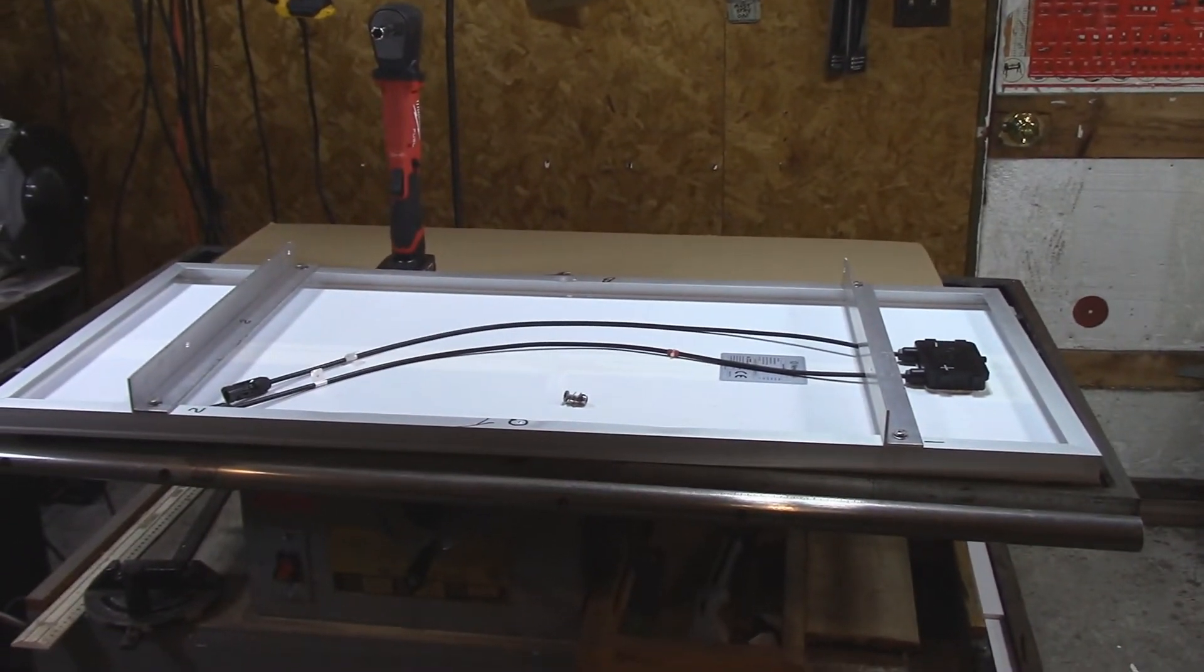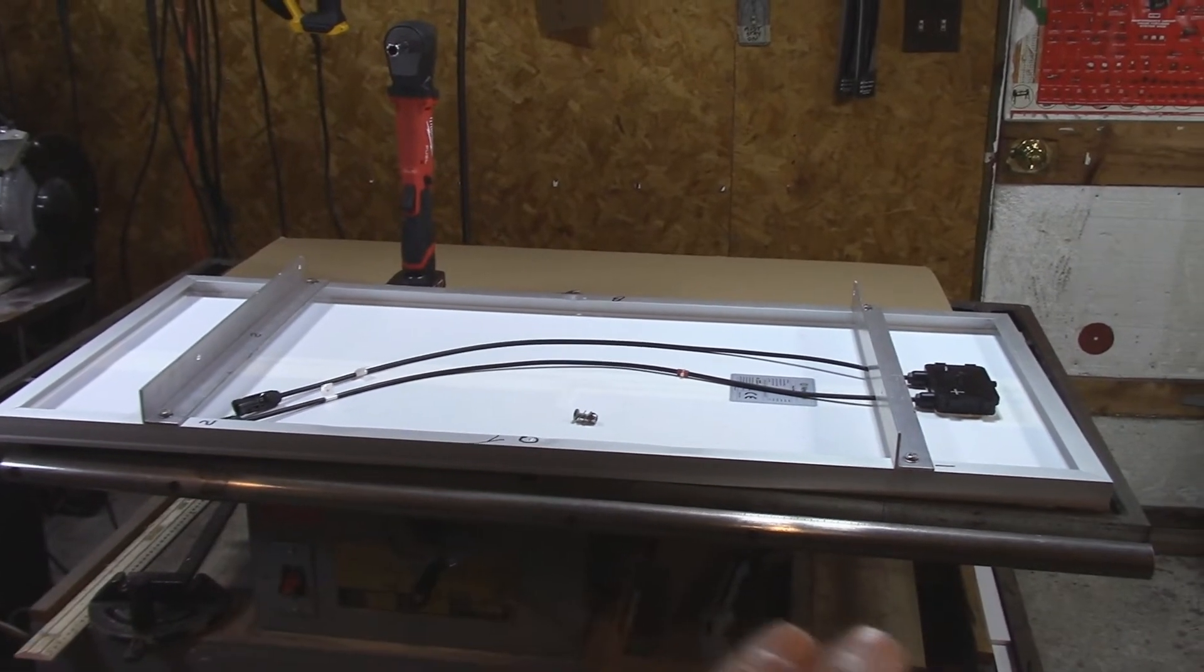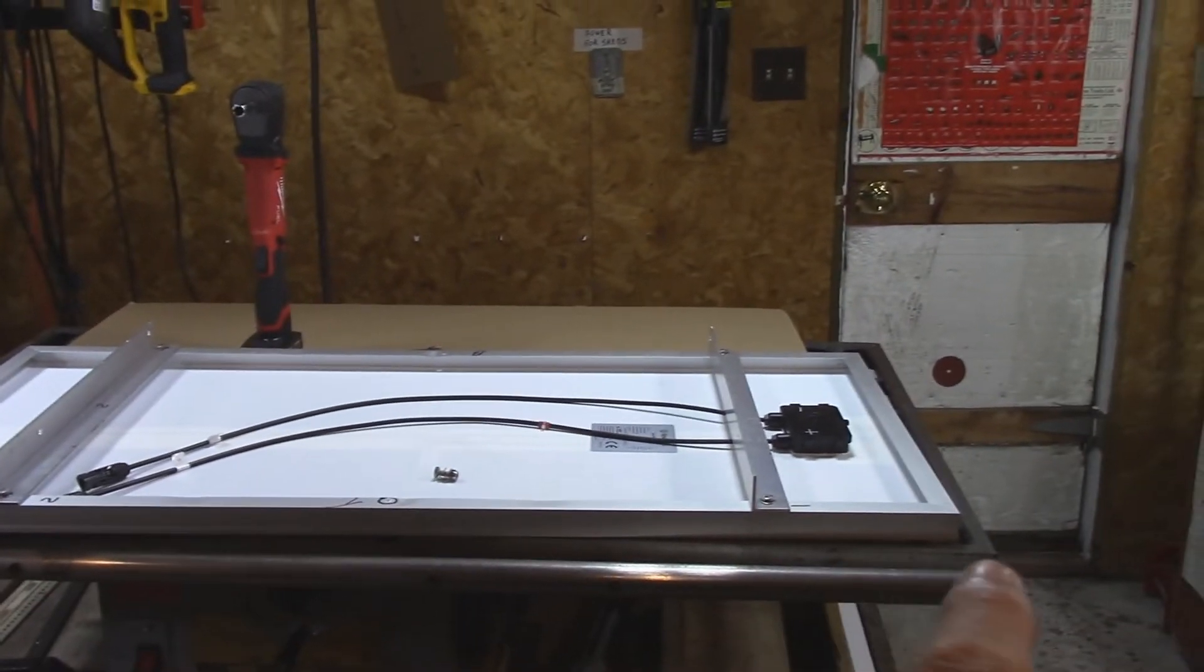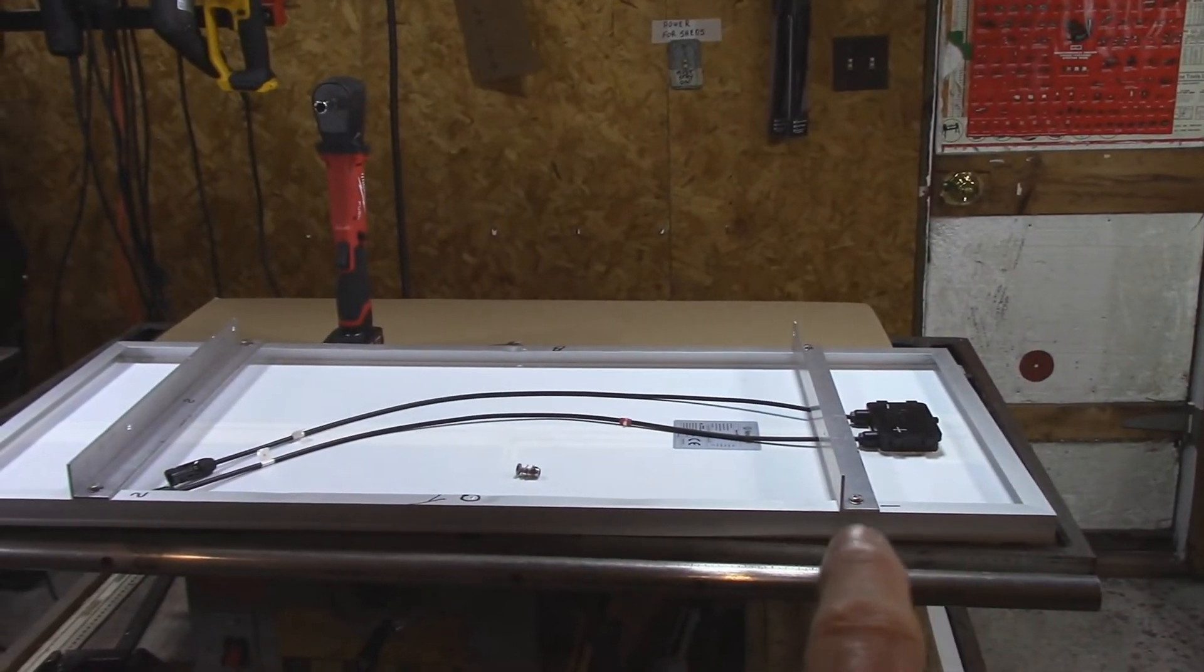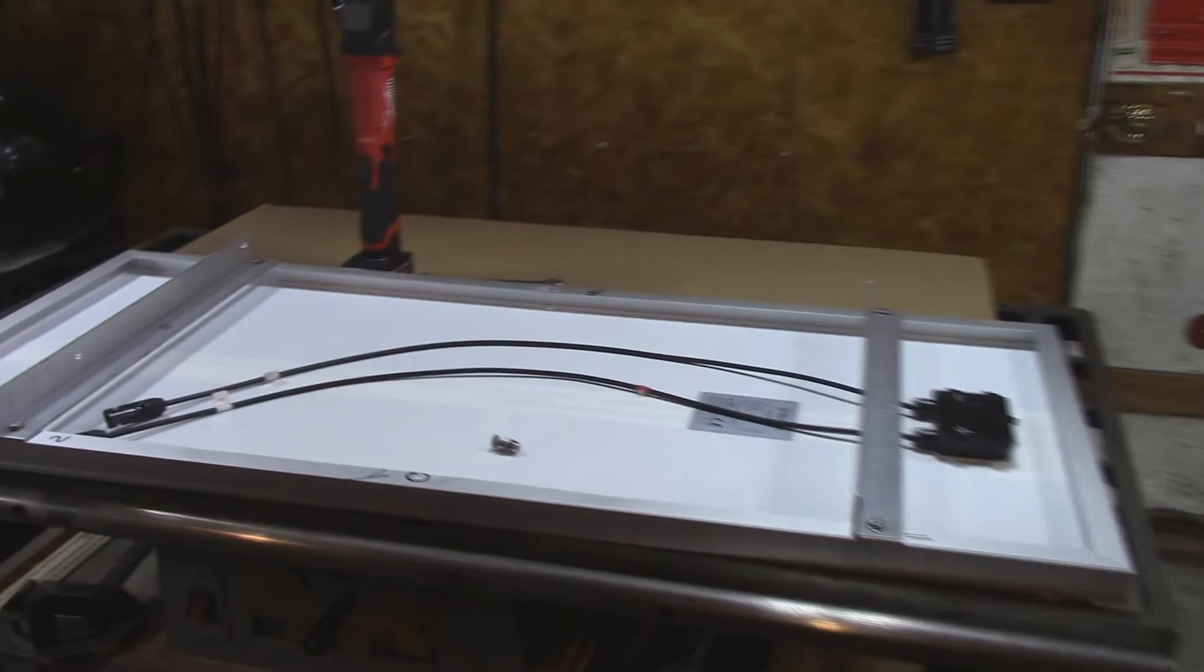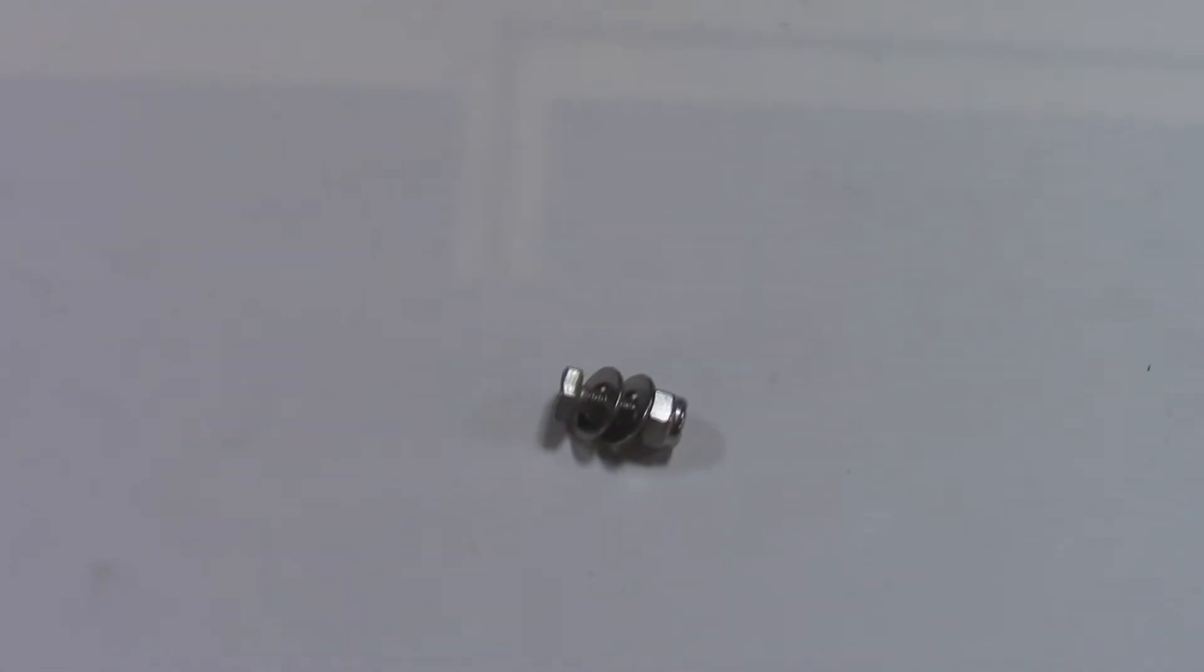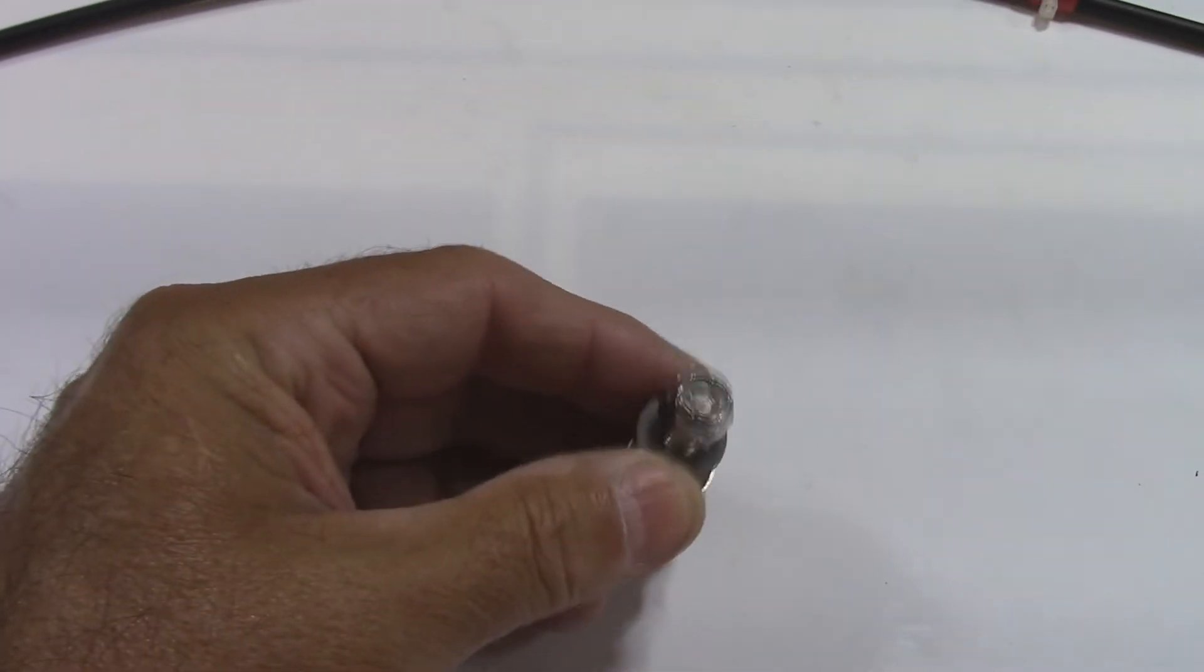Every solar panel that you're going to buy, the dimensions might change from one manufacturer to the other. But this one here is 45 and a half by 21 and an eighth. I like to use stainless steel, everything stainless steel, with a stainless steel nylon lock nut there.